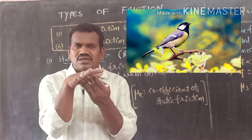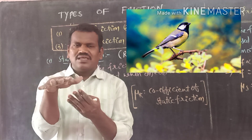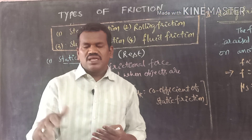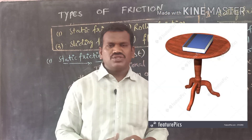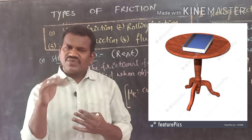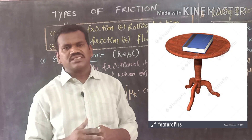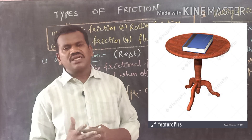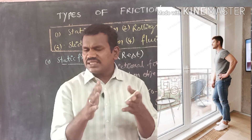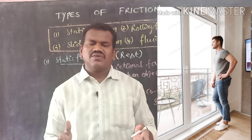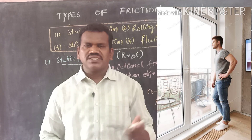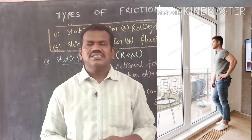Between the legs of the bird and the bark of the tree, there will be friction. That friction is nothing but static friction. Another example: a book is kept on the bench. The book is at rest and the bench is also at rest. The frictional force present between the book surface and the bench surface is static friction. Similarly, a person standing on the floor is at rest, and there will be a frictional force between the legs of the person and the surface — that force is called static friction.